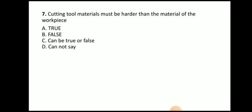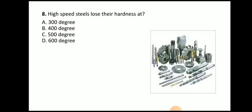Next question: cutting tool material must be harder than the material of the workpiece — the answer is true. The cutting tool material must be harder than the material which is to be machined. Next question: high speed steel loses its hardness at — the answer is 600 degrees Celsius. Beyond 600 degrees Celsius, the high speed steel loses its hardness.